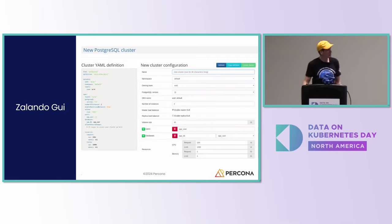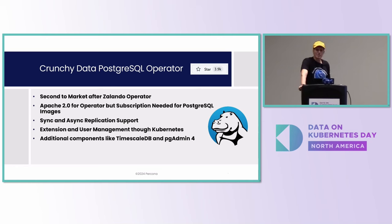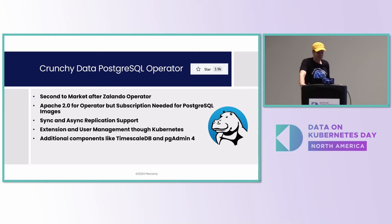The cool thing about Zalando is they also come with a GUI. The next operator to mention is CrunchyData's PostgreSQL operator, which has also been on the market for quite a while and has cool features like additional plugins for TimescaleDB and PGAdmin. The tricky thing is that while the operator itself is open source, it uses images that require a subscription from Crunchy — so it doesn't give you a completely open source experience.